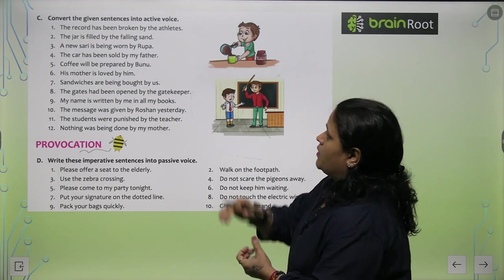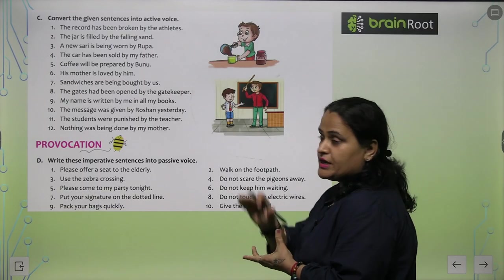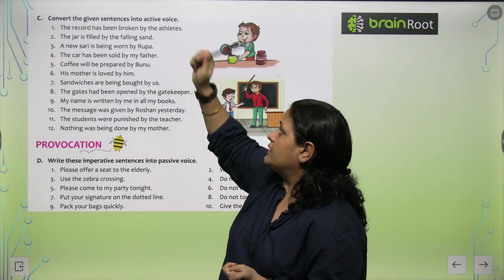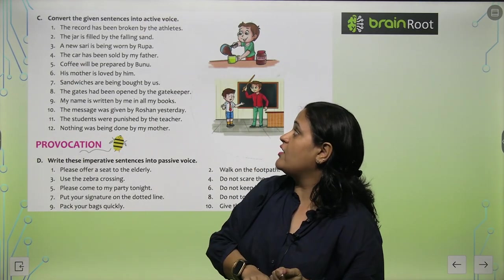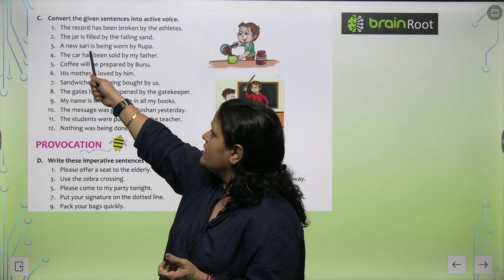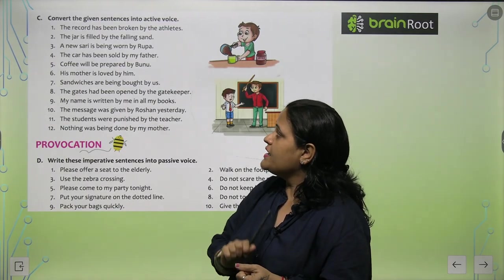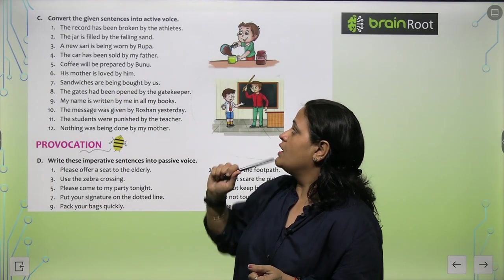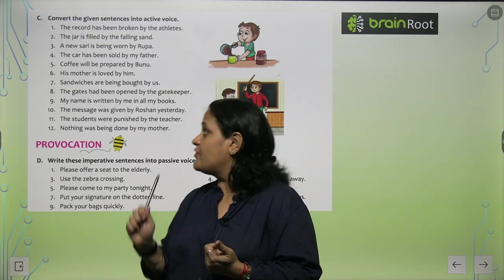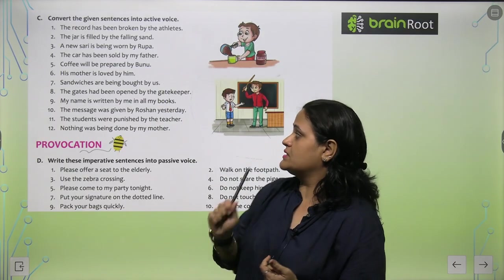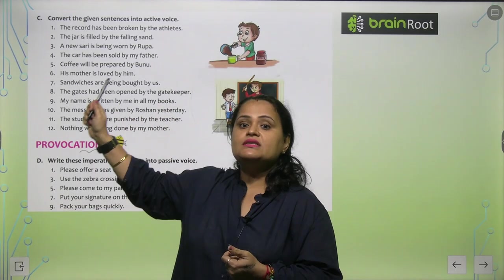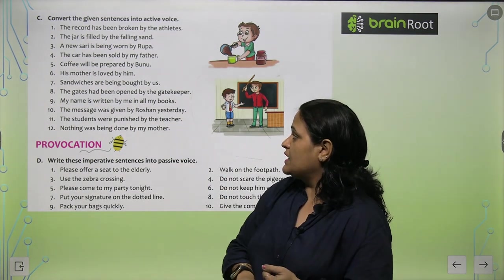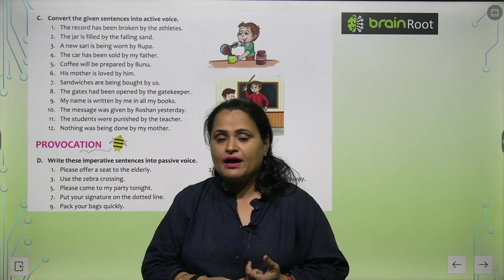Now convert the given sentences into Active Voice. 'The record has been broken by the athletes' — Athletes have broken the records. 'A new sari is being worn by Rupa' — Rupa is wearing a new sari. 'Coffee will be prepared by Bhanu' — Bhanu will prepare coffee. 'Sandwiches are being bought by us' — We are buying sandwiches. 'My name is written by me in all my books' — I write my name in all my books.